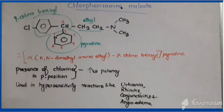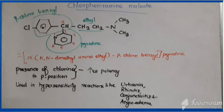The next drug is chlorpheniramine, available as a maleate salt. For its structure, pyridine is the parent. At the second portion of pyridine, the alpha carbon of benzyl is attached, and that benzyl carries a para-chlorine substituent. The alpha carbon is also connected with an N,N-dimethylaminoethyl group. The chemical name: 2-[α-(N,N-dimethylaminoethyl)-parachlorobenzyl]pyridine. The para-chlorine increases the potency of the compound.